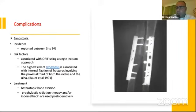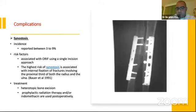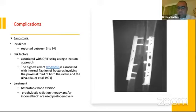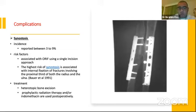Synostosis occurs in 3 to 9% in most studies. The risk factor is associated with ORIF through a single incision. The highest risk of synostosis, as stated by Bauer in 1991, occurs when both radius and ulna fractures are at approximately the same level — the proximity of the fracture sites. This will affect pronation and supination. Treatment requires excision, and prophylactic radiation therapy or indomethacin can be used postoperatively.